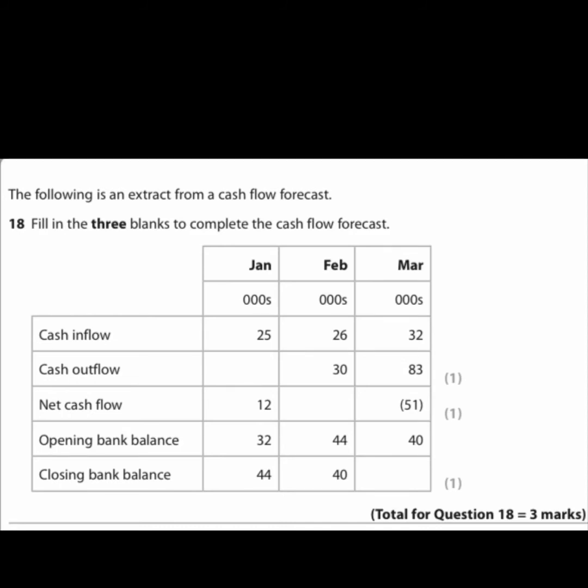For March, they've given you the net cash flow in brackets as 51, meaning minus £51,000, and the opening balance is £40,000. So: minus 51 plus 40 gives you a closing balance of minus £11,000. Even though February still had a positive closing balance of £40,000, the business has much greater negative net cash flow in March, which raises concerns.